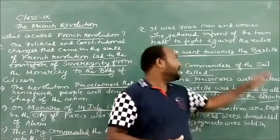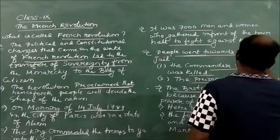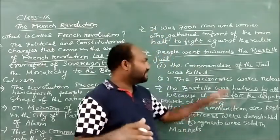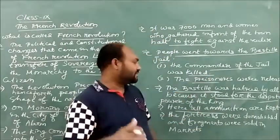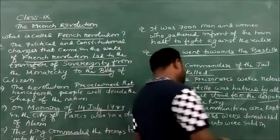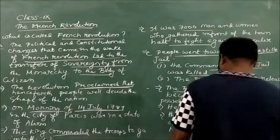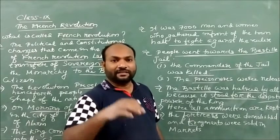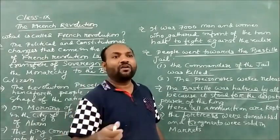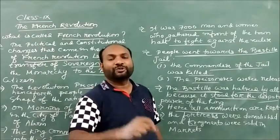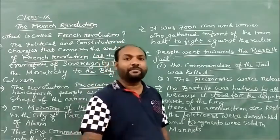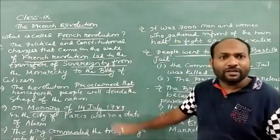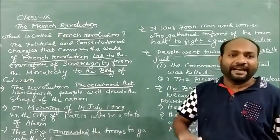As soon as they reached the Bastille, the people killed the jailer, released the prisoners, and demolished all the fortresses which were there in the Bastille in the city of Paris. They destroyed it and sold all these fragments in the market to keep as a souvenir, to keep it as a memory of the society. This is how we see that peoples were going towards the king and fighting against the ruler.